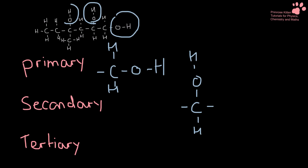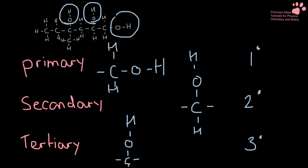And then we have this one up here. Again, we need to look at the carbon that it is attached to, and that has no hydrogens attached to it — it is only attached to other carbons. That makes it a tertiary alcohol. Sometimes I might use annotations like 1°, 2°, 3°, which just stand for primary, secondary and tertiary.